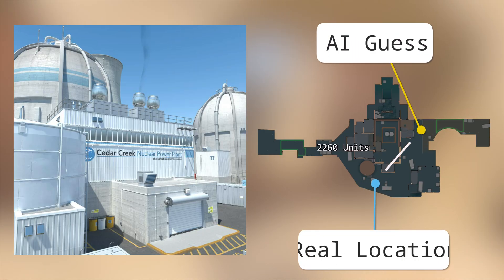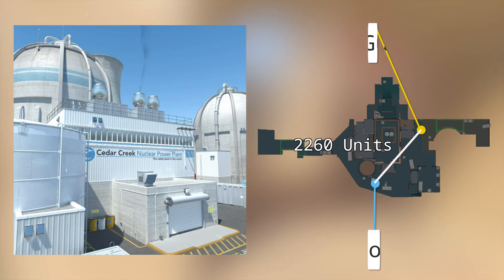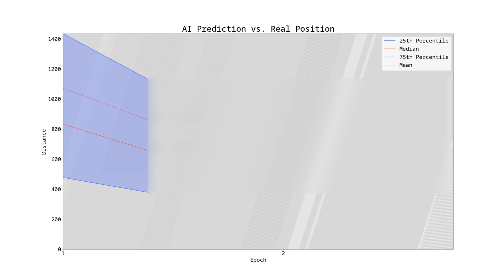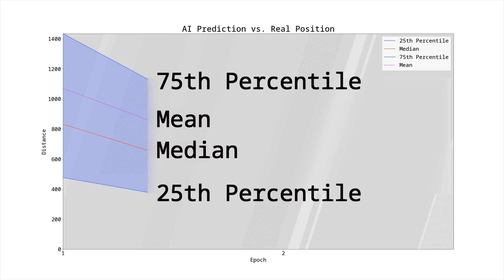I captured the median, the mean, and the 25th and 75th percentile. You are seeing the validation metrics, meaning the model has not seen these images during training. Each metric accounts for the whole validation set. A median distance of 400 would signify that 50% of all images in the validation set are 400 units or less off from the real location.